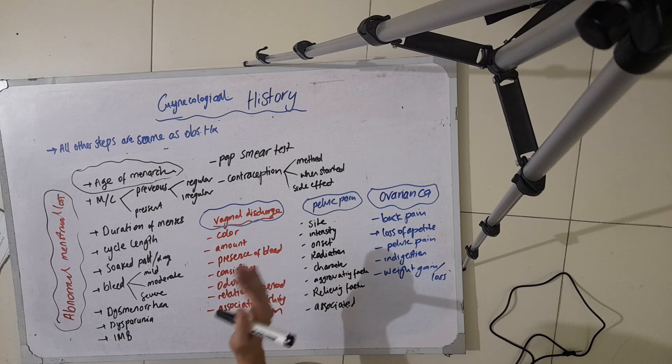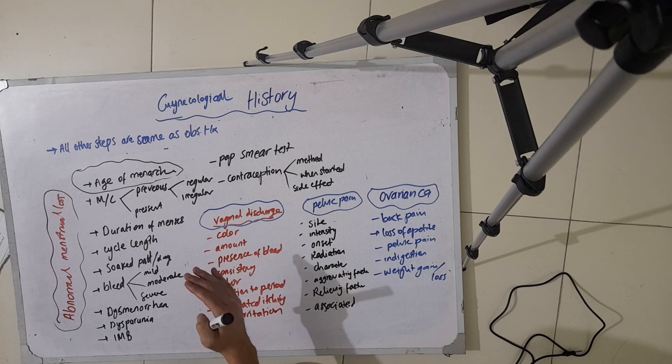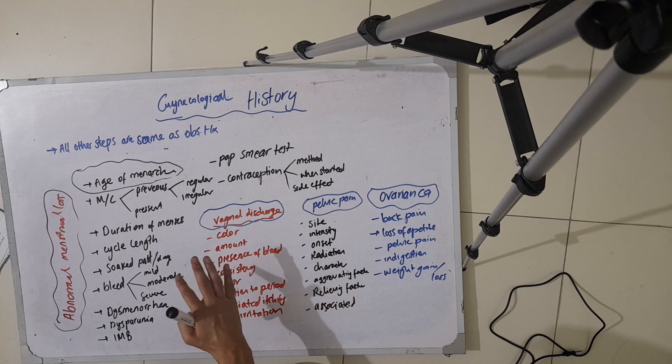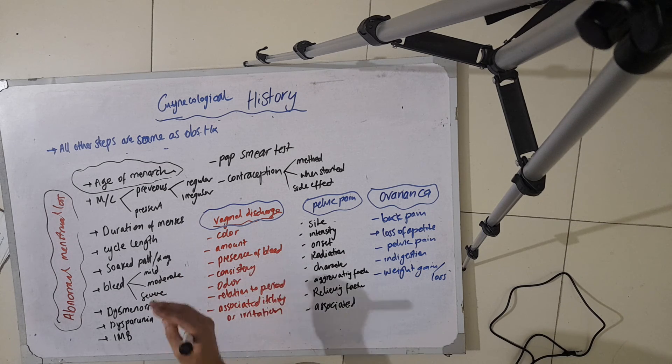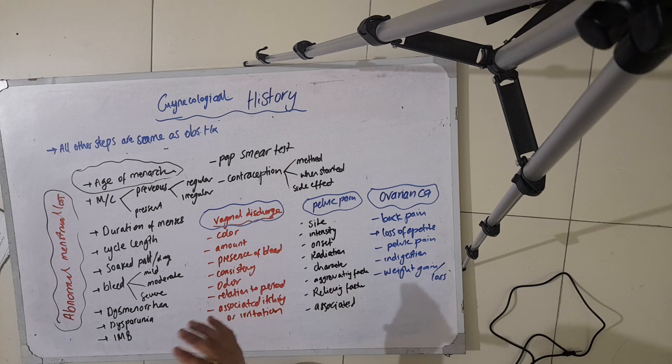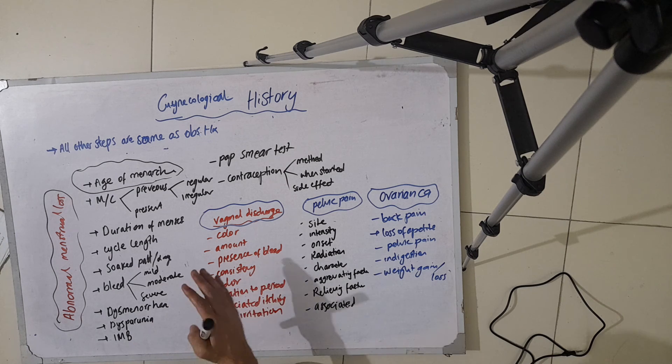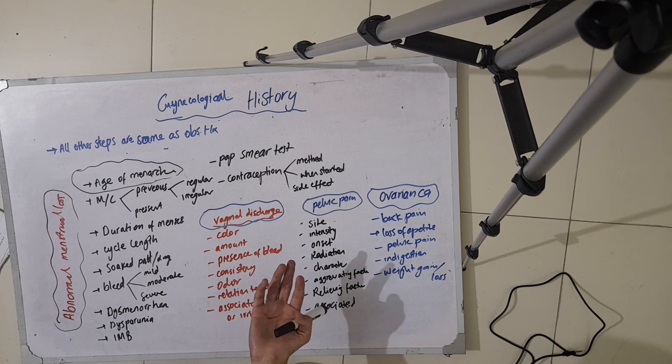In drug history, you ask whether they had previously any allergy to any drugs. In social and economic history, you ask whether they live in a joint family or separate family.